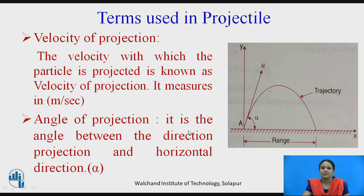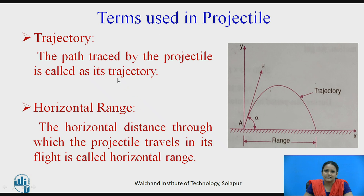Angle of projection: it is the angle between the direction of projection and the horizontal surface. Trajectory: the path traced by the projectile is called its trajectory. When you throw the particle U upward and it reaches the ground, the curved path it has traveled is called the trajectory. Horizontal range: the horizontal distance traveled by the particle from the starting point to where it touches the ground is called the horizontal range.